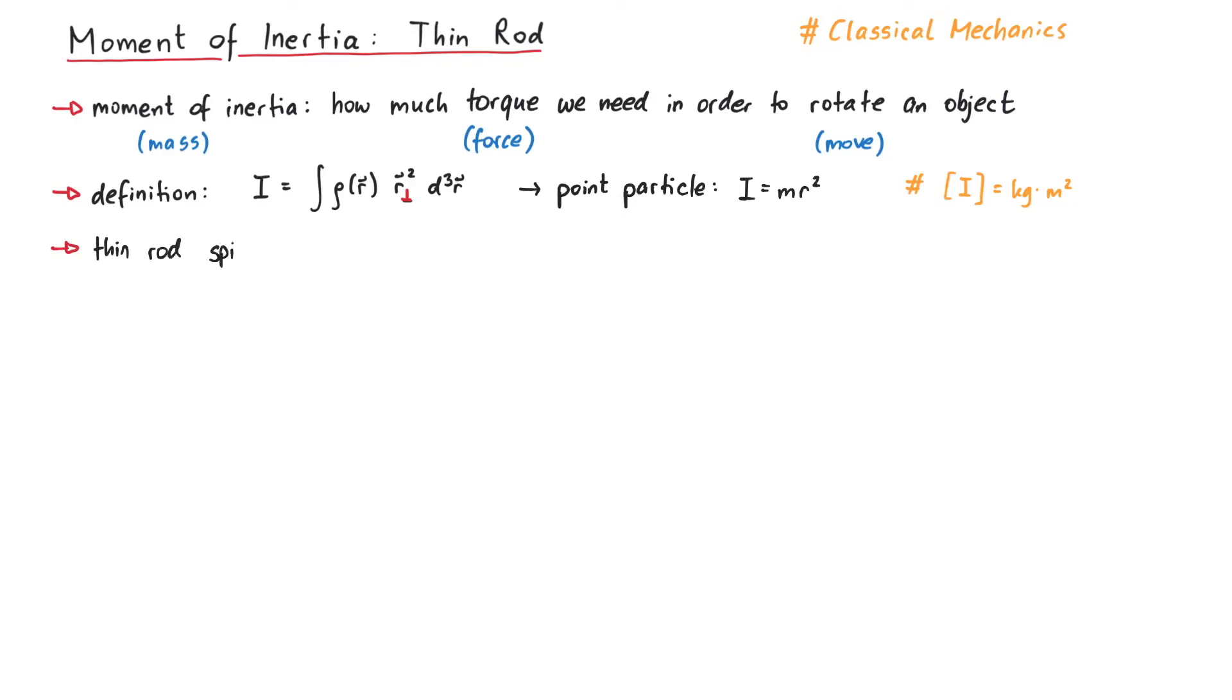Consider now a thin rod spinning around its center of mass and then also around one end. We denote the length of the rod with an uppercase L, and the other dimensions are negligible. This is what we mean by a thin rod.